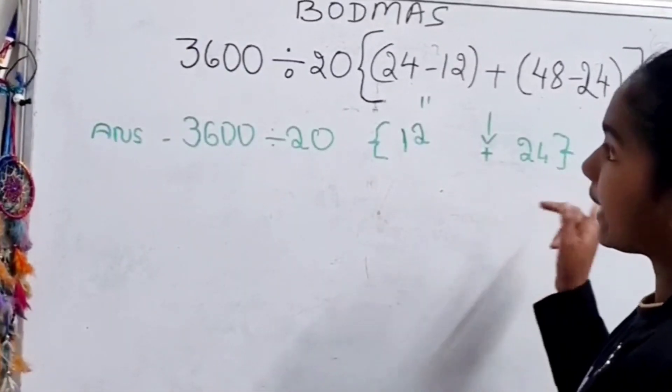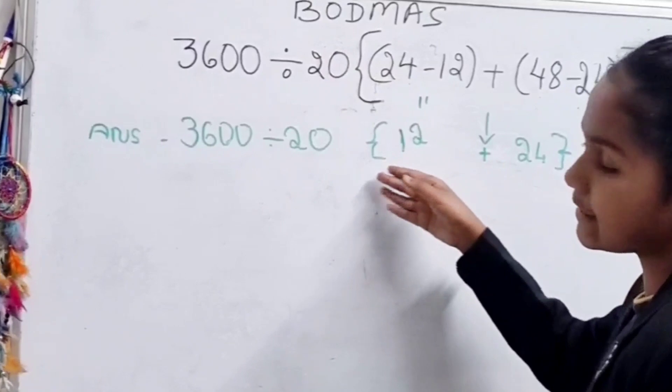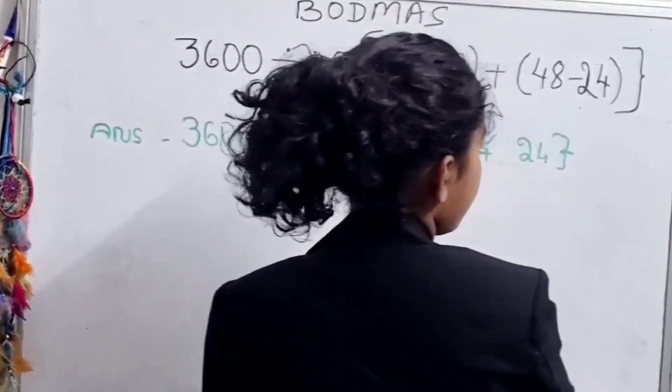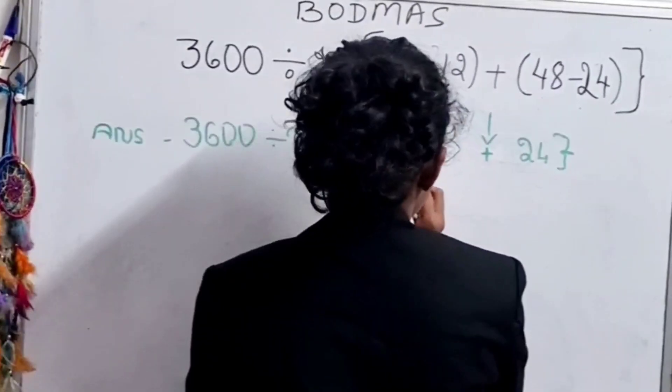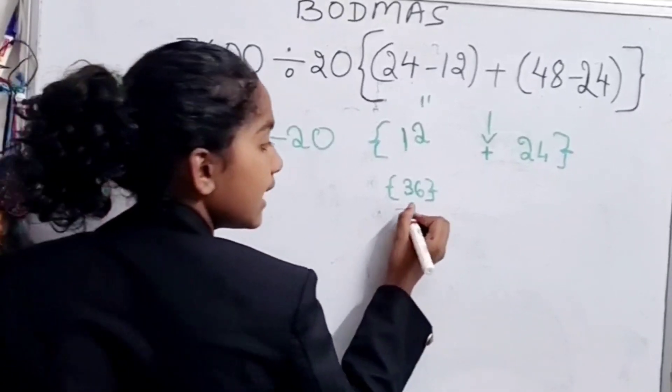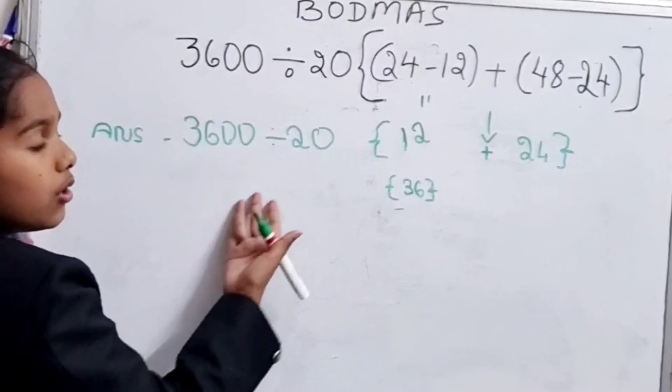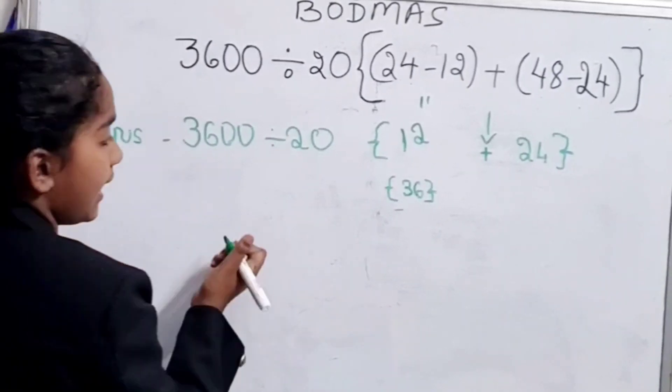Now let's bring this down as it is. As we have got this down, again it will be brackets only as it's still in the brackets. Now let's bring this down after adding it. After doing this, we will get 36.